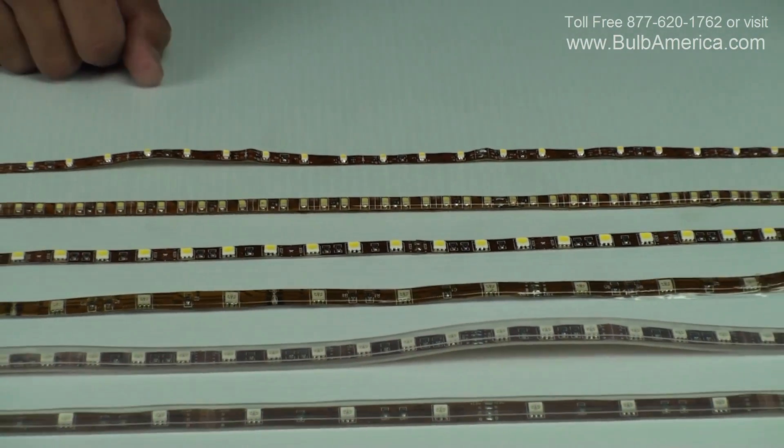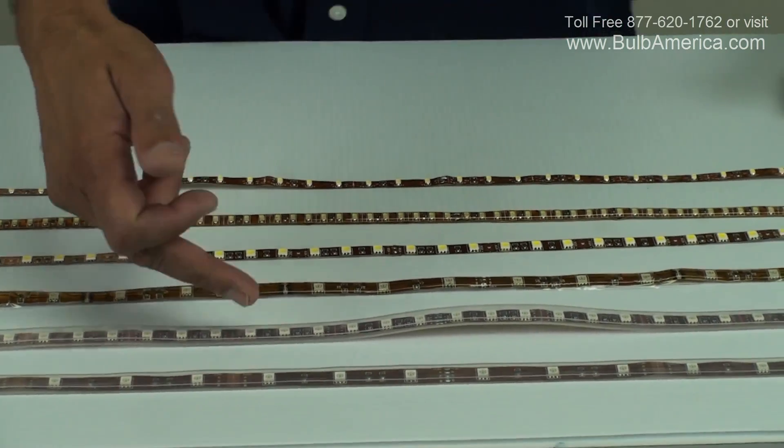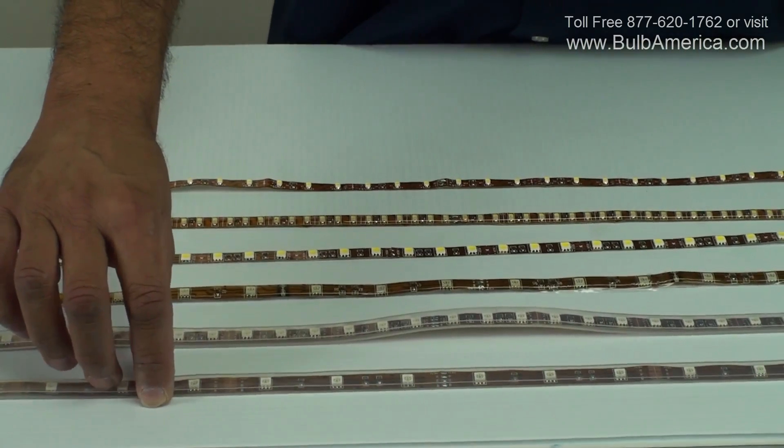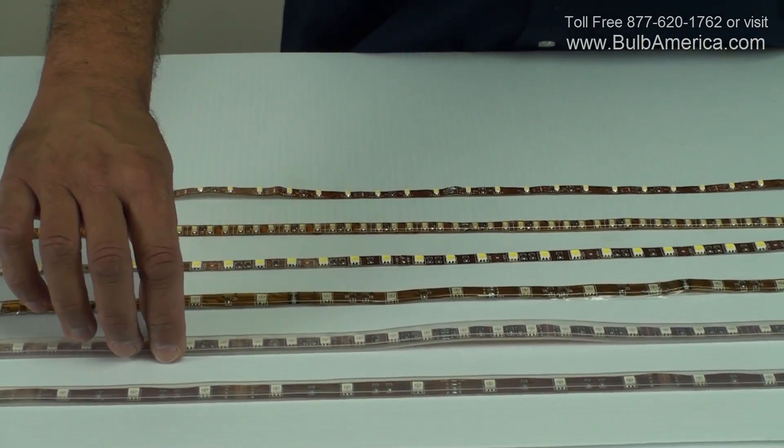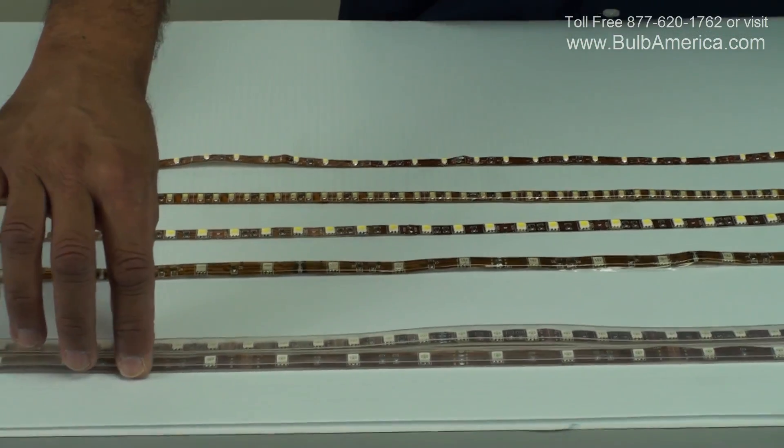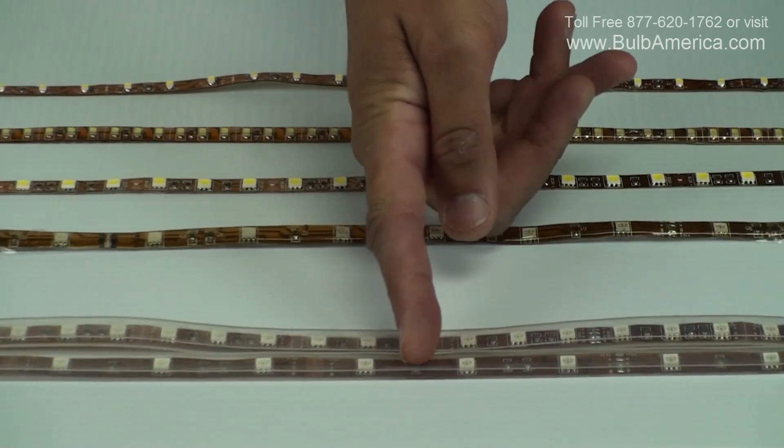The other main difference between them, between the size of the chip, is actually the number of LEDs per meter. So if this is a 30 LEDs per meter, and this one is a 60 LEDs per meter, exactly same chip, exactly same style. As you can see, there is more LEDs in the same span.